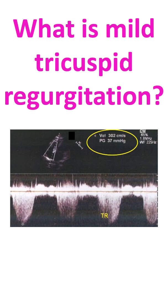The presence of mild leak helps the echocardiographer to assess the pressure in the right ventricle. Pressure in the right ventricle can be estimated from the velocity of the tricuspid regurgitation jet. This picture illustrates the measurement of TR velocity and gradient by a test known as Doppler echocardiography.